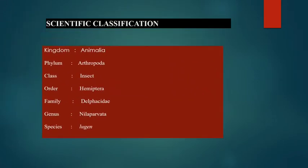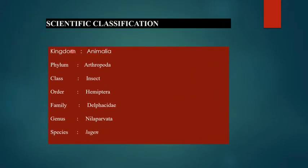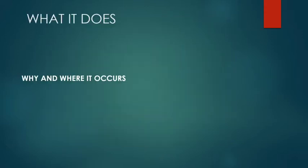The scientific classification of the brown plant hopper: it belongs to kingdom Animalia, phylum Arthropoda, class Insecta, order Hemiptera, family Delphacidae, genus Nilaparvata, species lugens — known as Nilaparvata lugens.